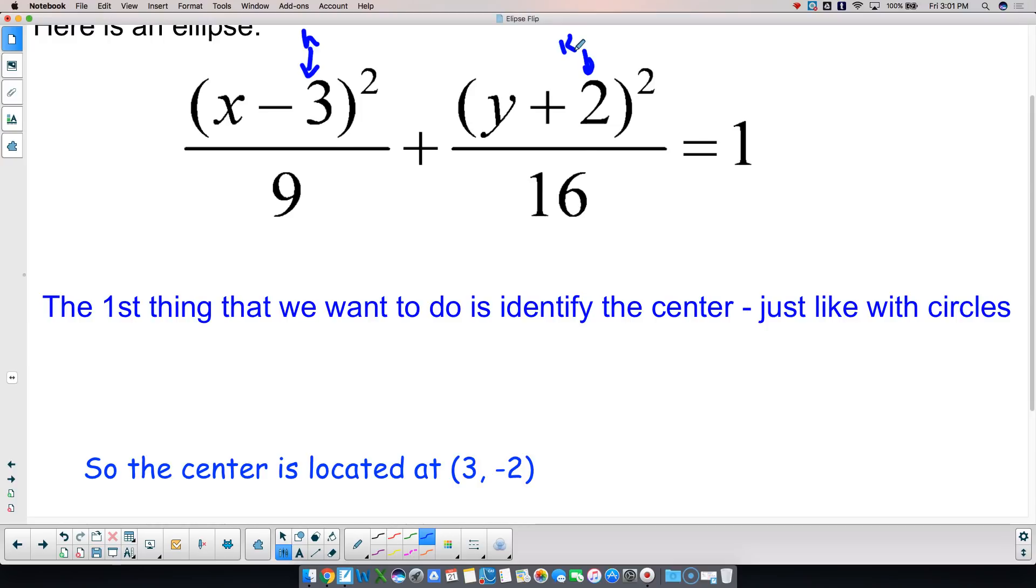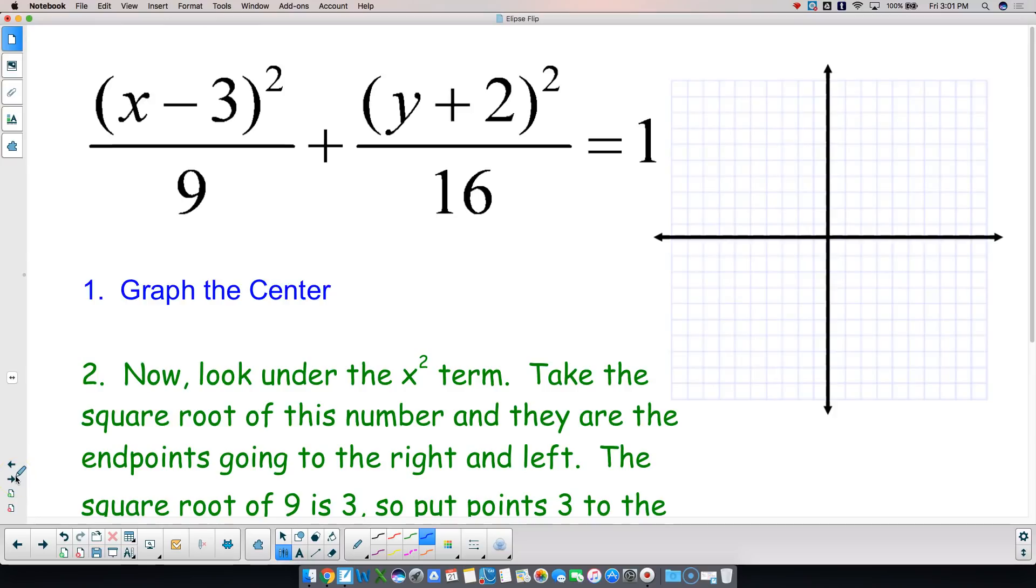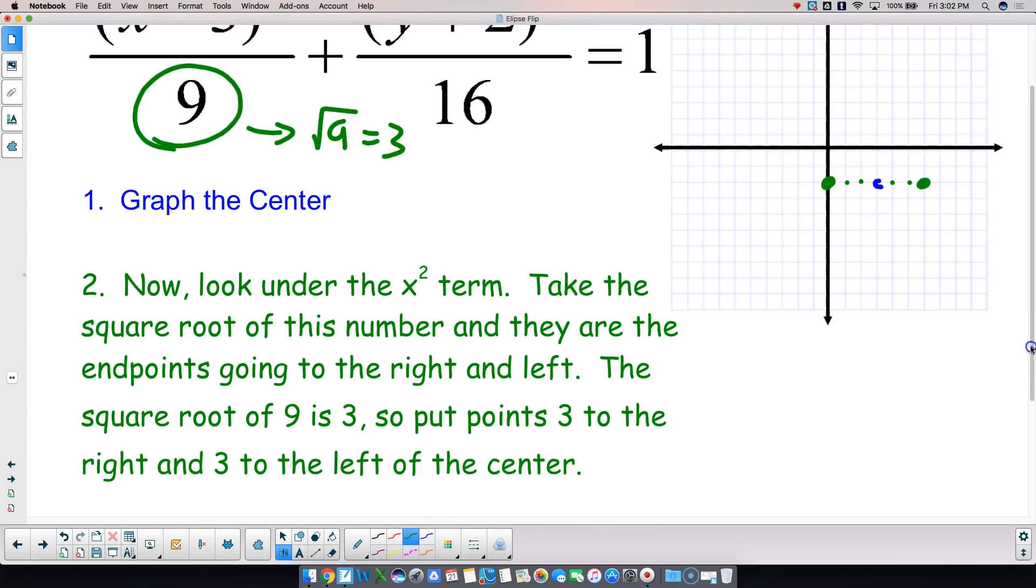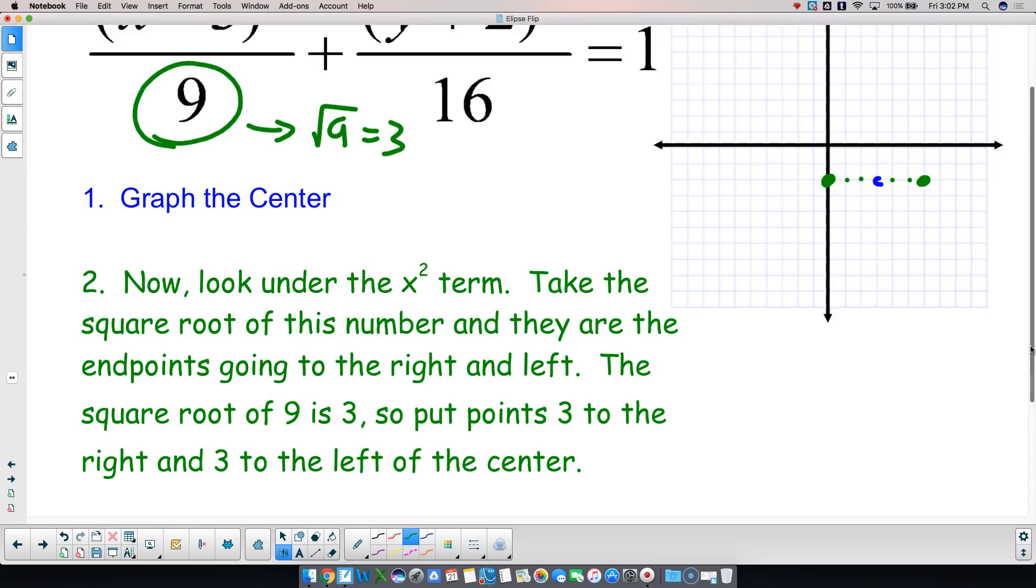Now, the next thing that I'm going to do is I am going to... So we're first going to graph that center. 3, negative 2 puts my center right there. Okay? Now what we're going to do is we're going to look underneath the x squared term. So that's this number right here that's underneath the x squared term. I'm going to take that number, and I'm going to square root it. Okay? And that's going to be my endpoints going left and right because it's underneath the x. So the square root of 9 is 3. So I'm going to go left 3, 1, 2, and 3, and that's going to be an endpoint. 1, 2, and 3 to the right, and that's going to be an endpoint. Okay? So because it's 9, I went left and right 3, and I put endpoints there.